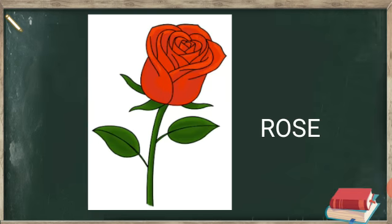This is rose. Rose is also of red color. Rose ka color bhi red hotey hai. And rose is a beautiful flower — you can see in the picture how beautiful the rose looks. And rose gives a pleasing smell. Rose hum ko sugandh khushbu bhi deta hai.